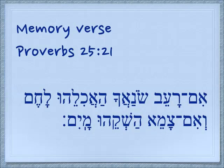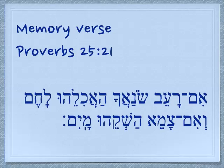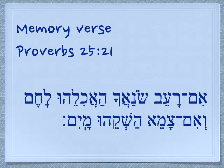Here is your memory verse from Proverbs 25:21. I will read it slowly, then word by word, then in context again. Im ra'ev sona'cha ha'achilehu lachem. Ve'im t'ameh hashkehu mayim. If — Im — hungry — ra'ev — the one who hates you — sona'cha — feed him — ha'achilehu — bread — lachem. Ve'im, if, t'ameh, he is thirsty, hashkehu, give him something to drink — what? Mayim — water.